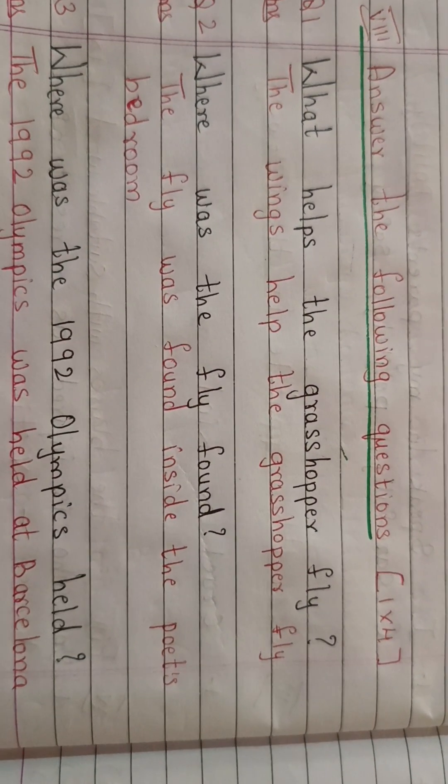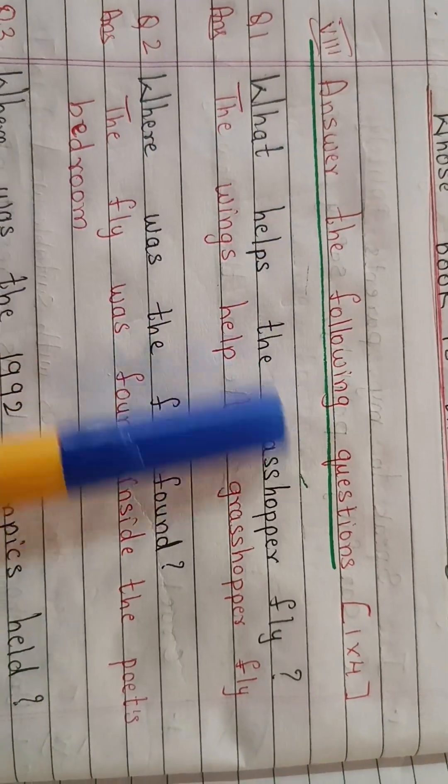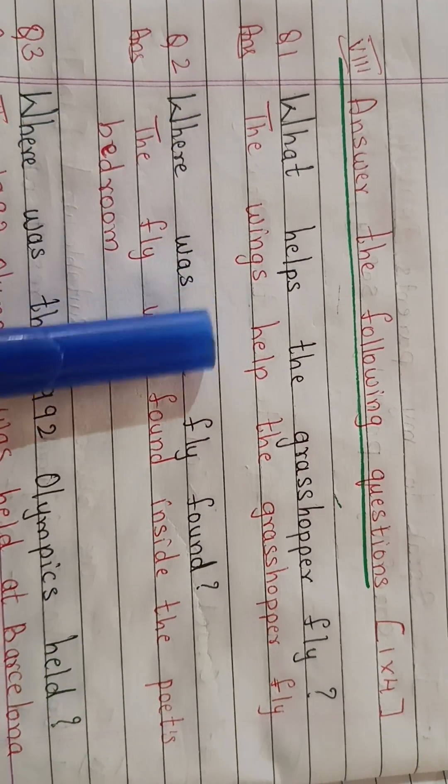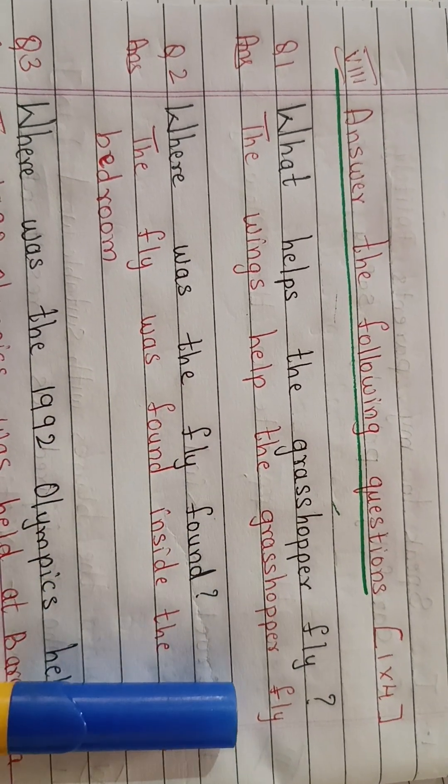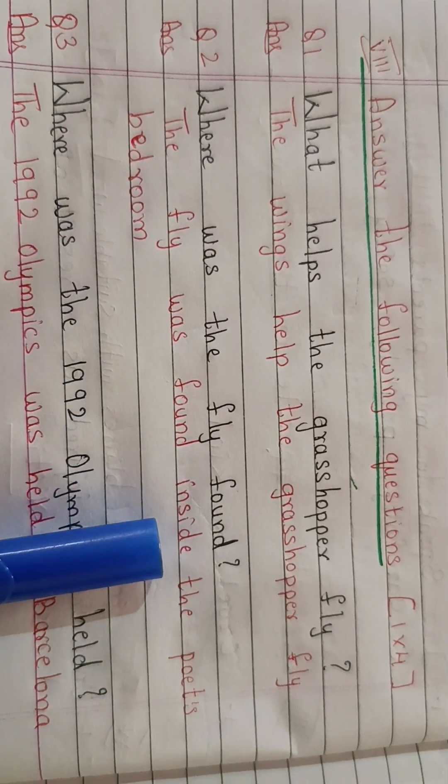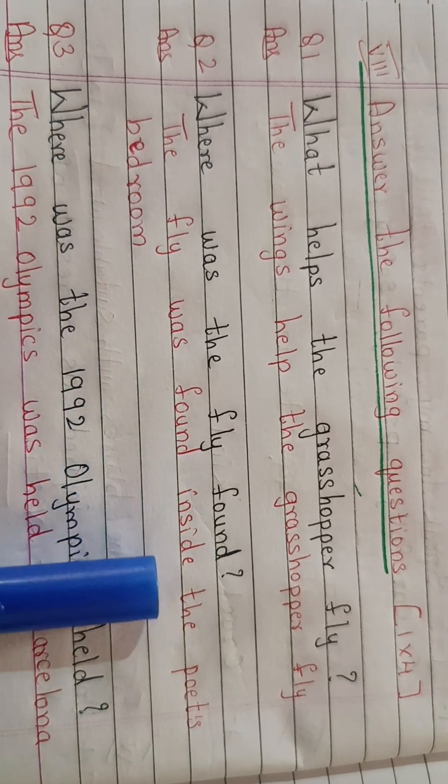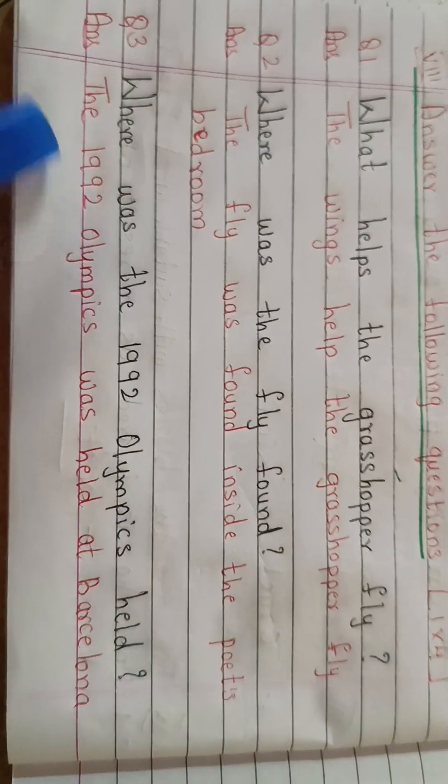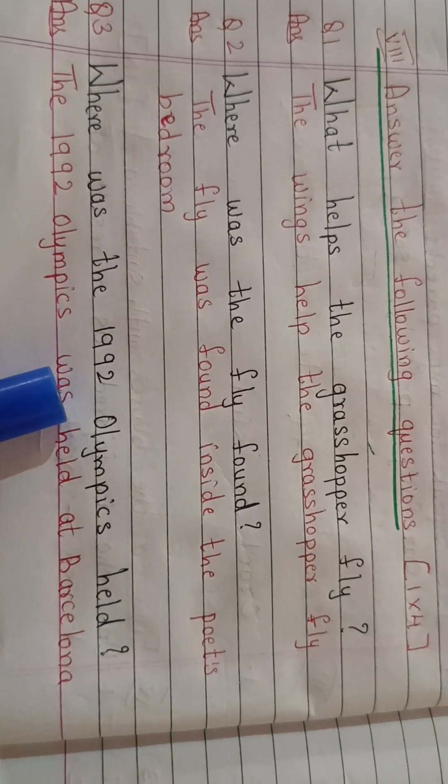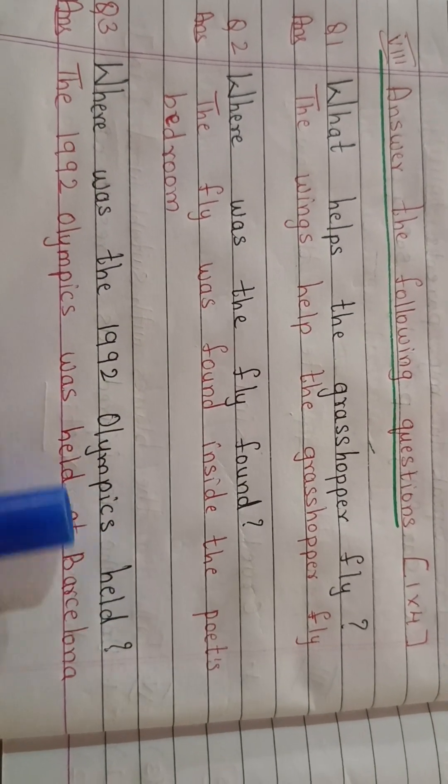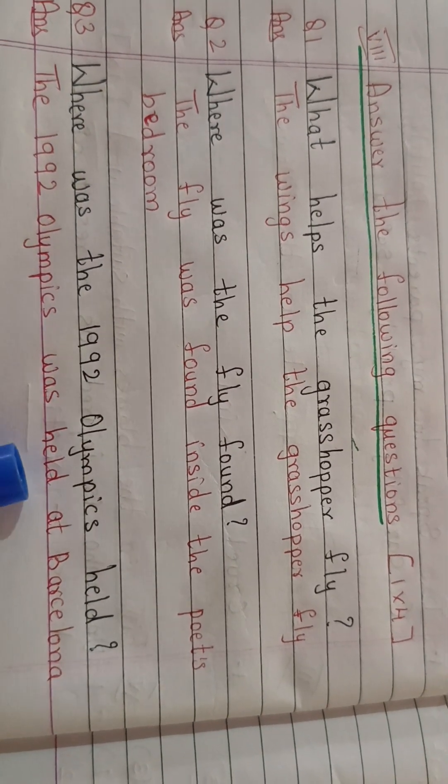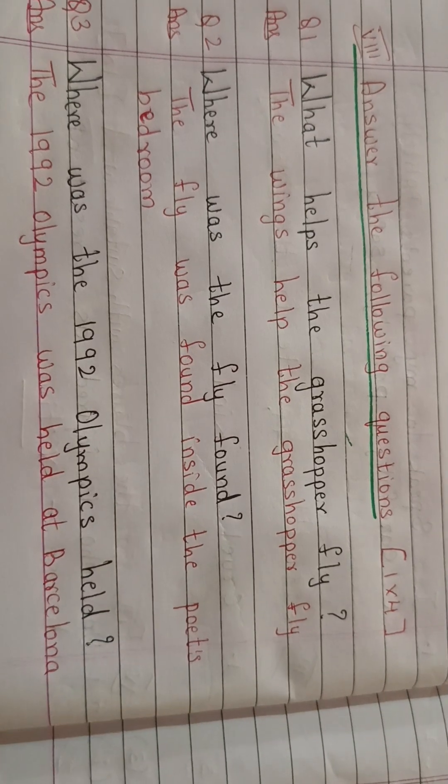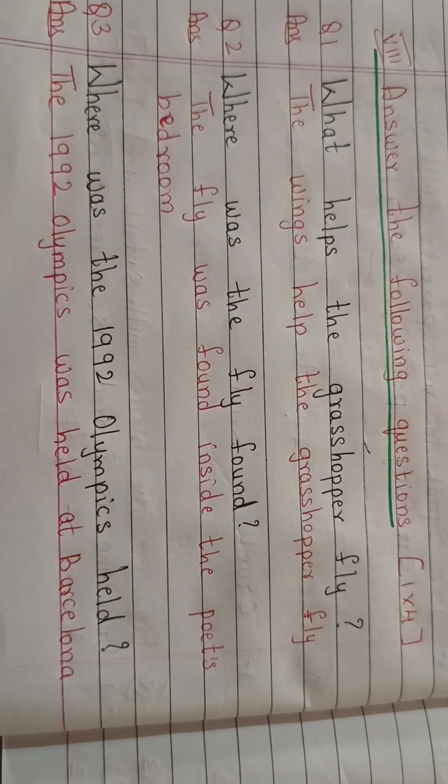Going to the next question. Answer the following questions. What helps the grasshopper fly? The wings help the grasshopper fly. Where was the fly found? The fly was found inside the poet's bedroom. Third question: where was the 1992 Olympics held? The 1992 Olympics was held at Barcelona. So this is the third question.